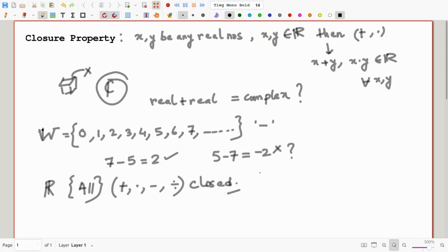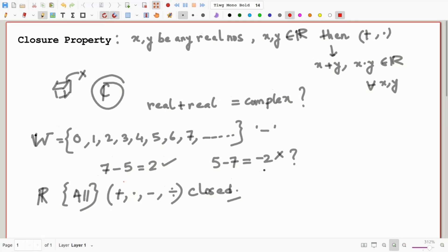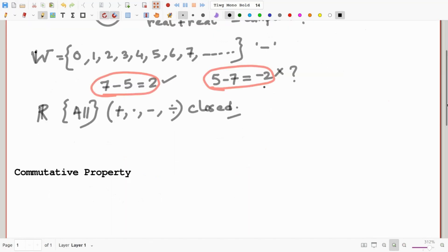So this subtraction example shows another important point. The order mattered here. Observe that 7 minus 5 was 2 and 5 minus 7 was minus 2. The order matters. Understand it?